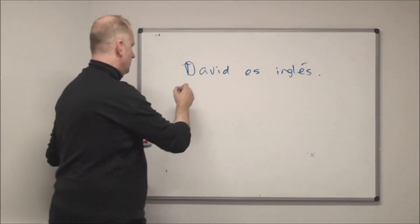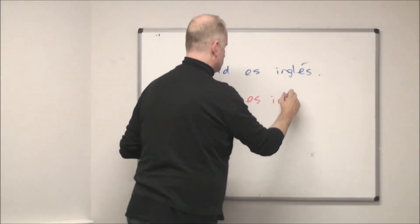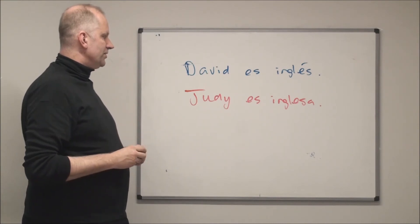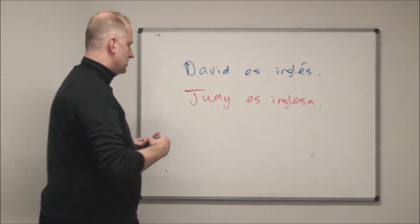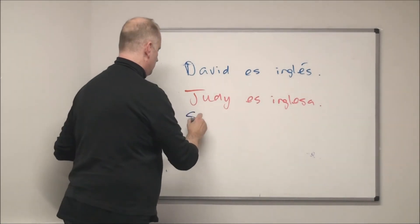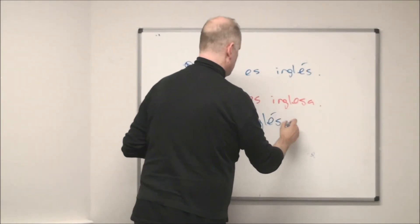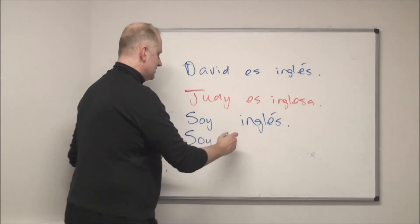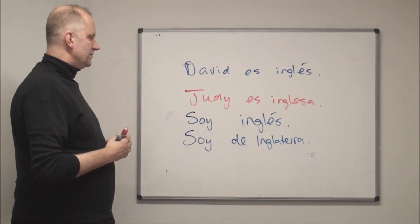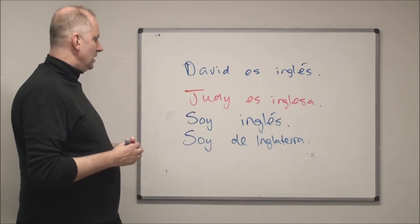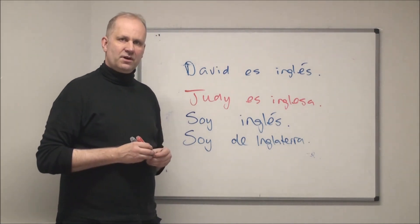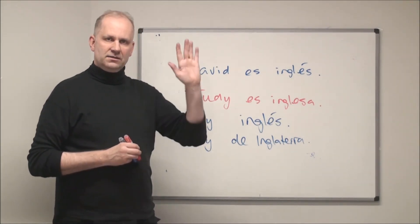David Beckham is English. When you describe where somebody is from, you can say 'soy inglés' — 'I'm English' — or you can say you're from England using the country name. It doesn't matter which one you use; whichever you feel more comfortable with. So now you can describe where people are from according to their nationality. Until next time!